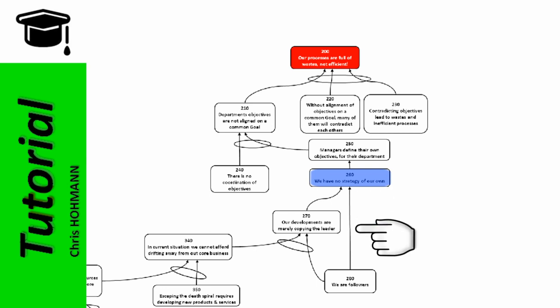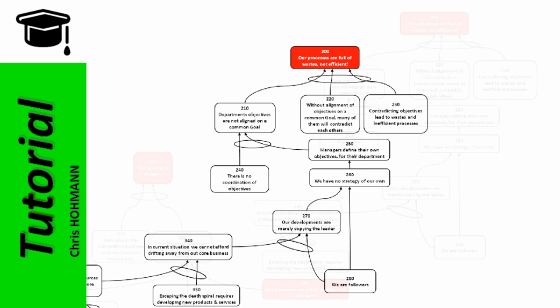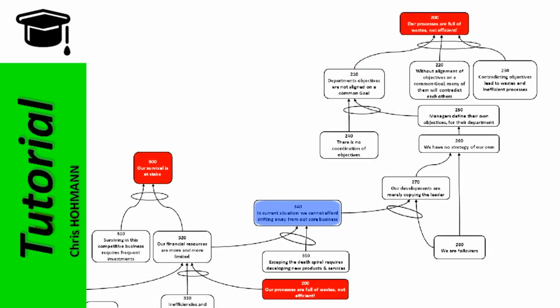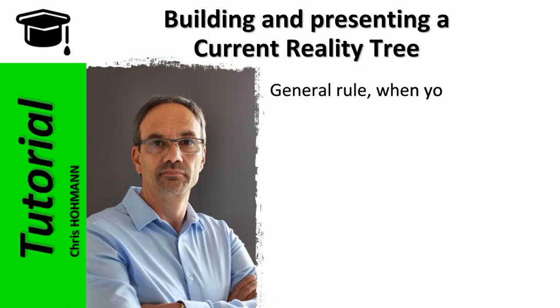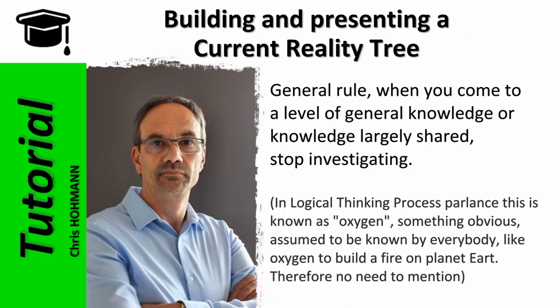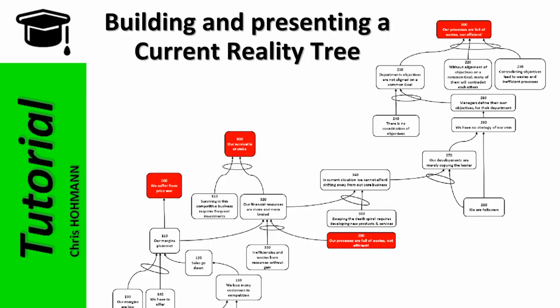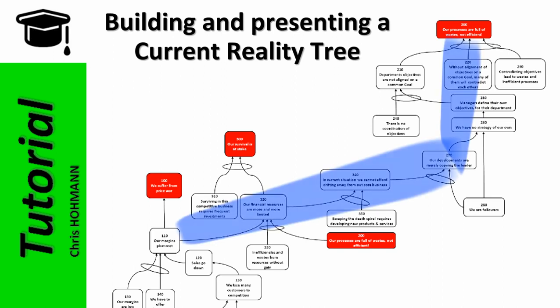This is because there is no corporate strategy onto which to align objectives. When clarifying what no strategy means, the explanation is: we are followers and our developments are merely copying the leader. Why copy the leader? Because in the current situation we cannot afford drifting away from our core business, which is further explained by entity 320: financial resources are more and more limited. There is a need for new products and service development to escape the death spiral. We stop digging deeper from entity 350 because developing new products requires investment - this is general knowledge widely shared. We now have a lateral connection linking our three initial UDs.